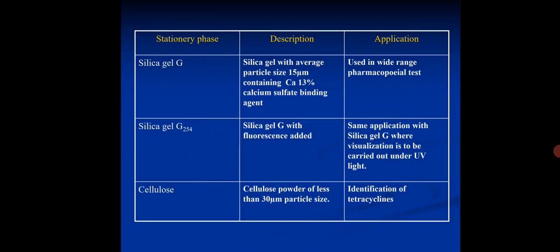Here you see stationary phase description and application. Silica gel G, this is the stationary phase. Description: silica gel with average particle size 15 micrometers, containing calcium 30%, 13% and calcium sulfate binding agent. Application: used in wide range pharmacopeial tests. Next, silica gel G254, that is silica gel G with fluorescent added. Some applications with silica gel G where visualization is to be carried out under UV light. Next accessory phase is cellulose, cellulose powder of less than 30 micrometer particle size, identification of the tetracyclines.